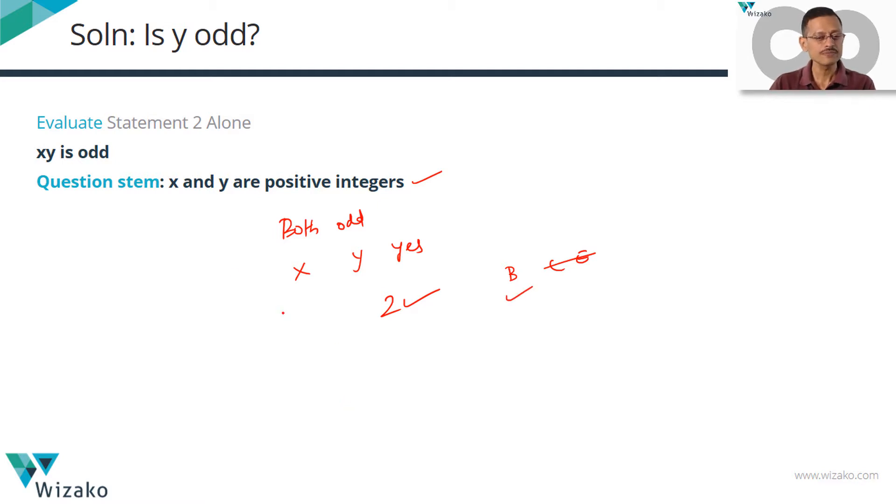Hold on for a minute. Without this information, x and y are positive integers. Could we have answered this question? Would statement 2 be sufficient? We will always think that product of two odd numbers is odd. Perfectly all right.